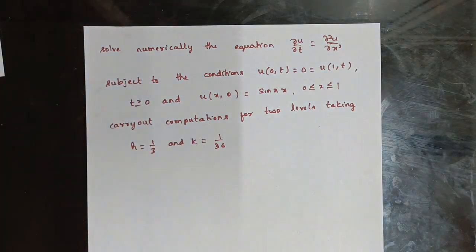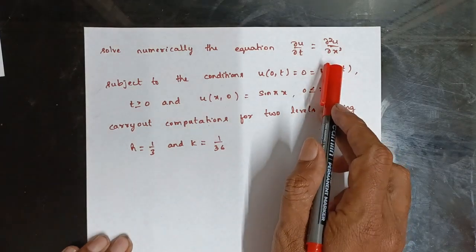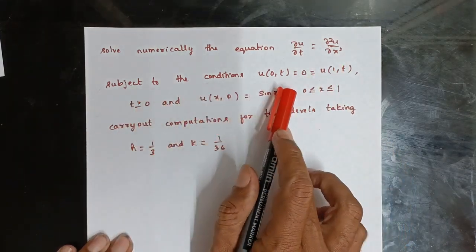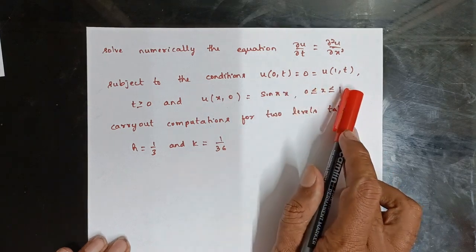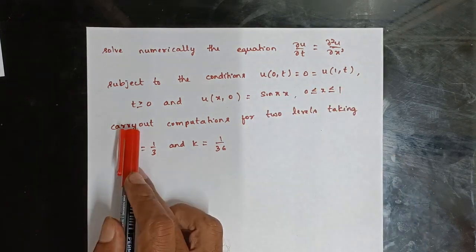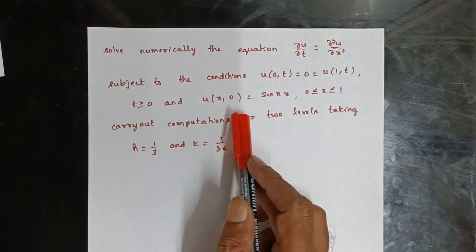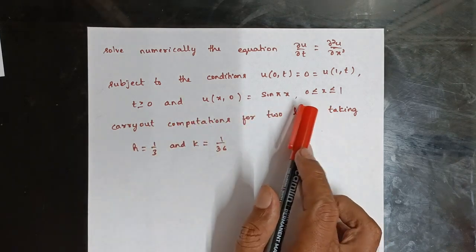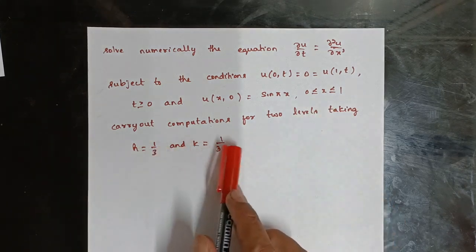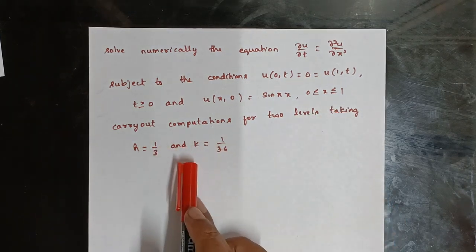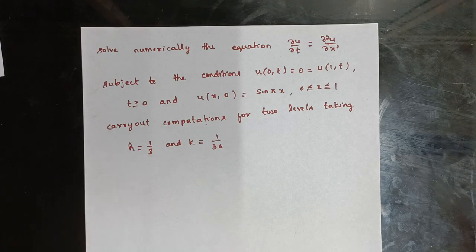Solving numerically the equation ∂u/∂t = ∂²u/∂x², subject to the conditions u(0,t) = 0 = u(1,t) for t ≥ 0, and u(x,0) = sin(πx) for x between 0 and 1. Carry out computations for two levels taking h = 1/3 and k = 1/36.